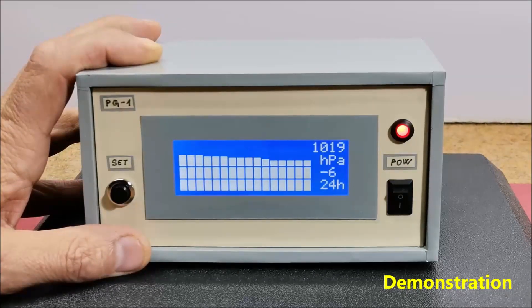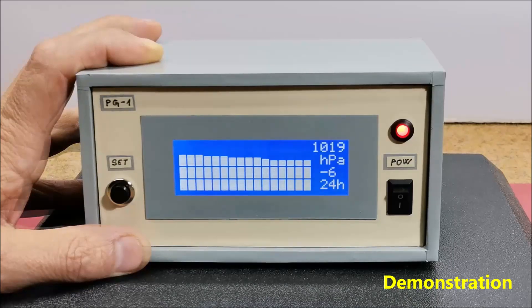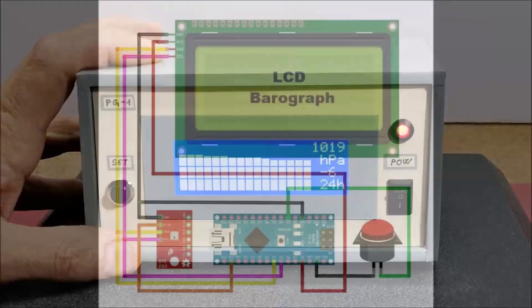And in the last 24 hours the pressure dropped by 6 hectopascals. If the pressure continues to fall it will be a sure sign of a change in weather and possibly rain. And now let's see how this device was made.